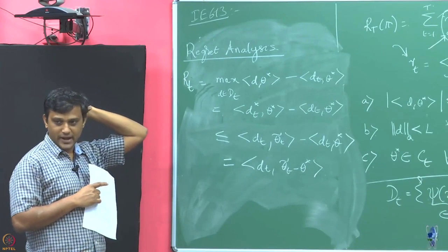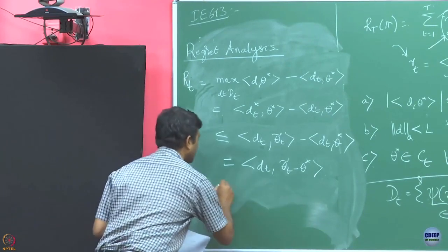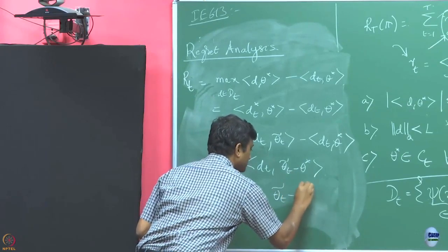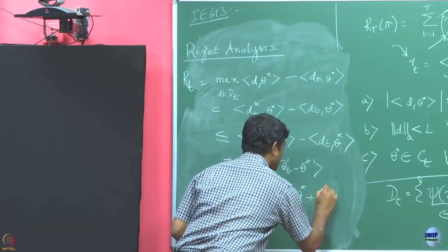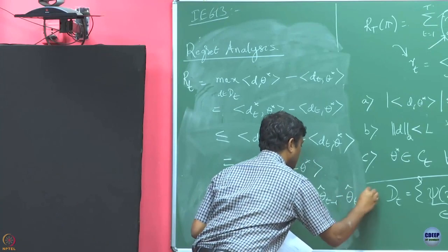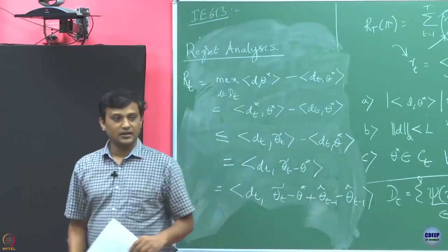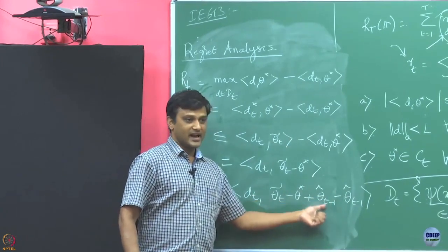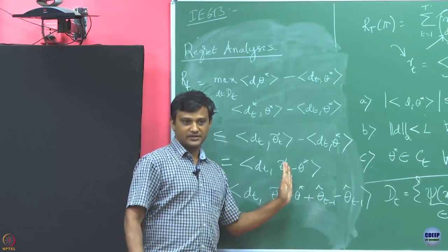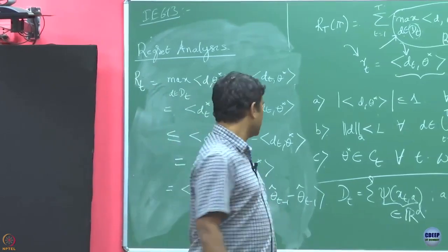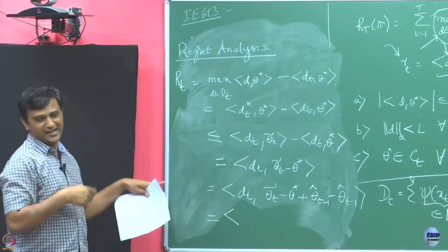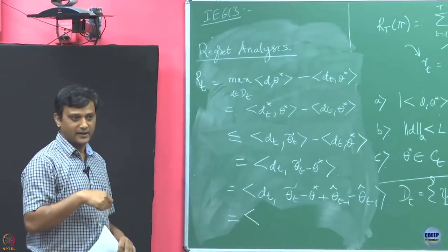We are going to do one more manipulation. We will simply add and subtract θ̂_{t−1} — the estimate of θ* at round t−1. Now let us simplify. You will see why I am doing all these manipulations to get it into some required format.